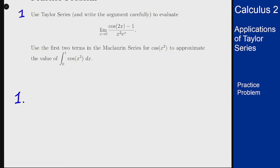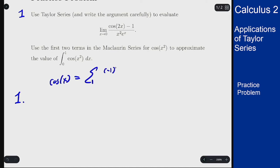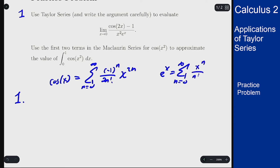Using Taylor series, we know that cos(x) has the series given by the sum from n=0 to infinity of (-1)ⁿ / (2n)! · x^(2n), and eˣ has the Taylor series given by the sum from n=0 to infinity of xⁿ / n!.